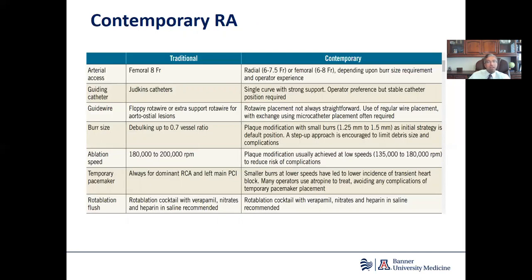Guide wires haven't changed much. Traditionally you use a rotofloppy wire or an extra support roto wire — a stainless steel wire with a tip of 0.009 inch. It's a wire that's difficult to use. Most of the time, I recommend crossing the lesion with a workhorse wire, then using a microcatheter to exchange to a roto wire. That's the current approach most operators use, rather than trying to wire the lesion primarily with a roto wire.